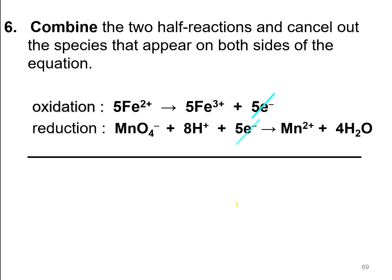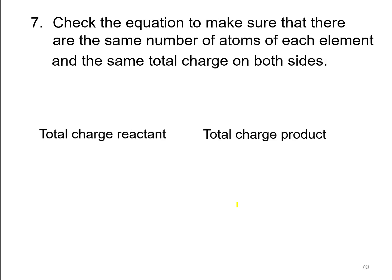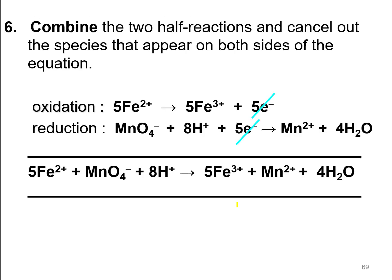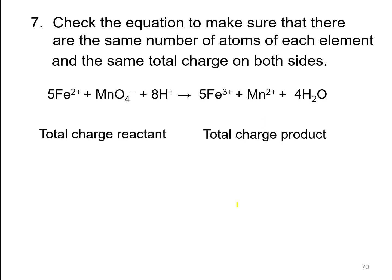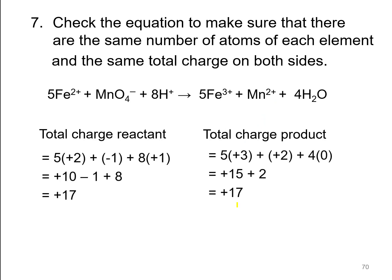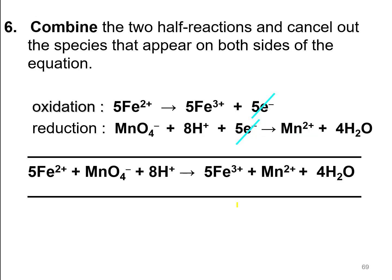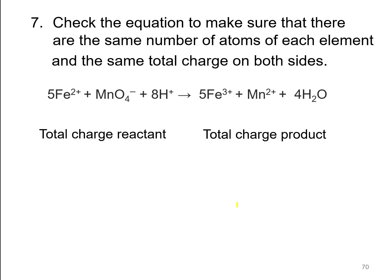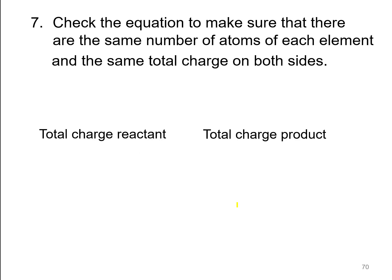This is the final combined balanced equation: 5Fe²⁺ + MnO₄⁻ + 8H⁺ → 5Fe³⁺ + Mn²⁺ + 4H₂O, with coefficients 5, 1, 8, 5, 1, and 4 water. We have verified the total charge of the products and confirmed the equation is balanced.